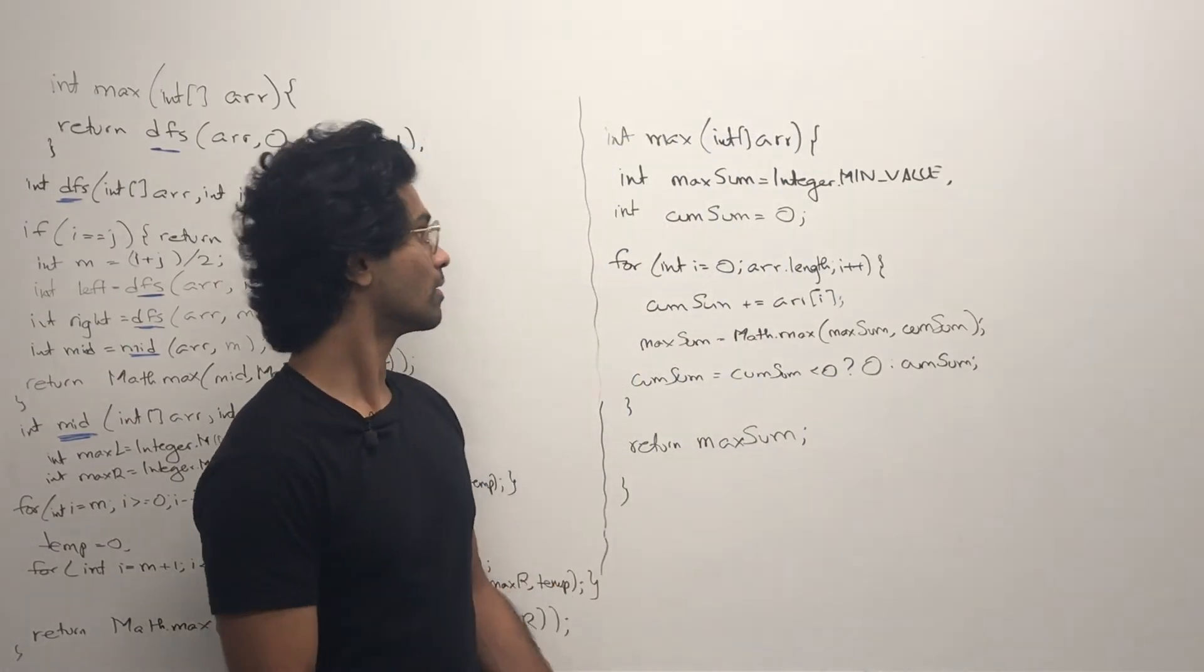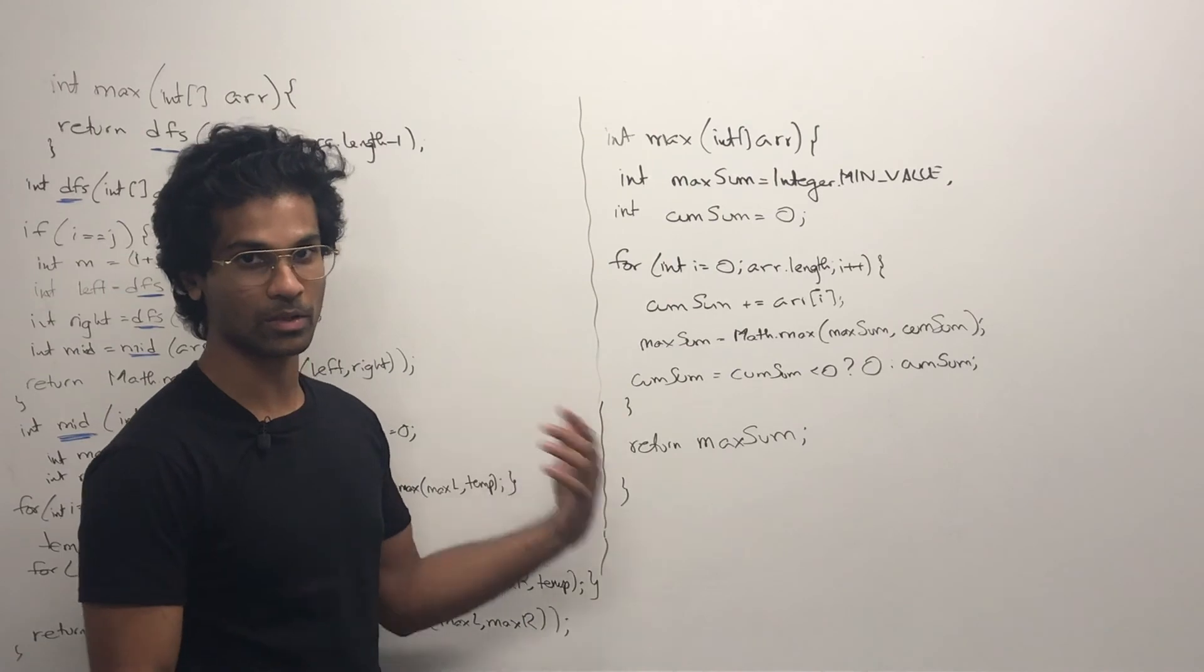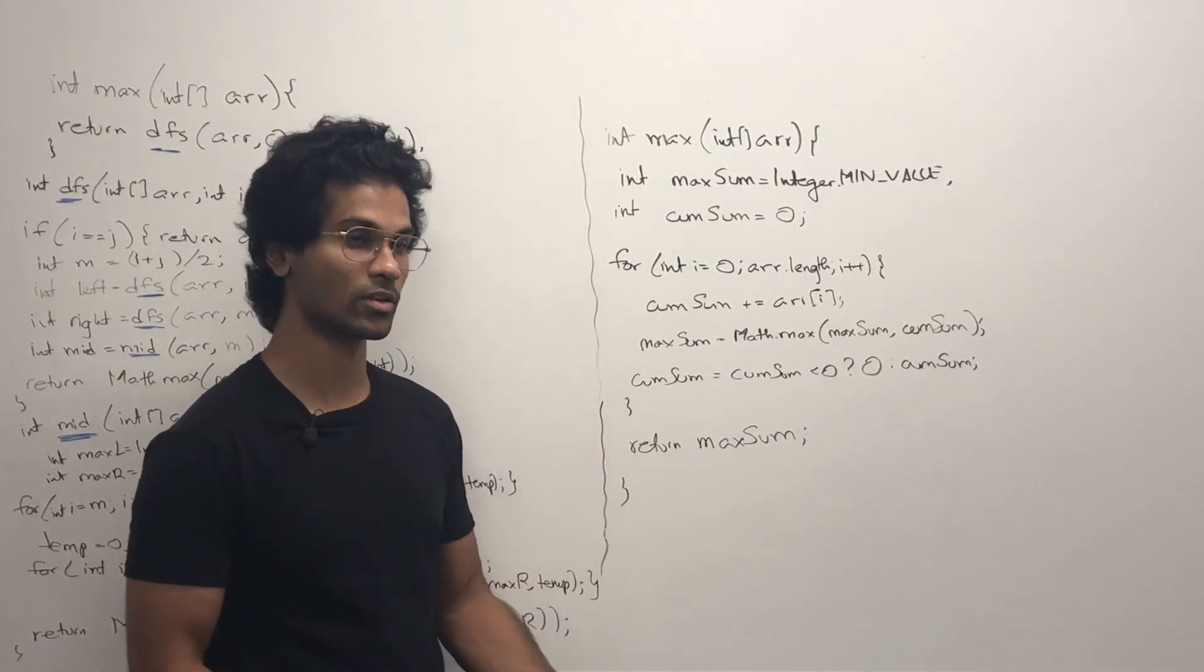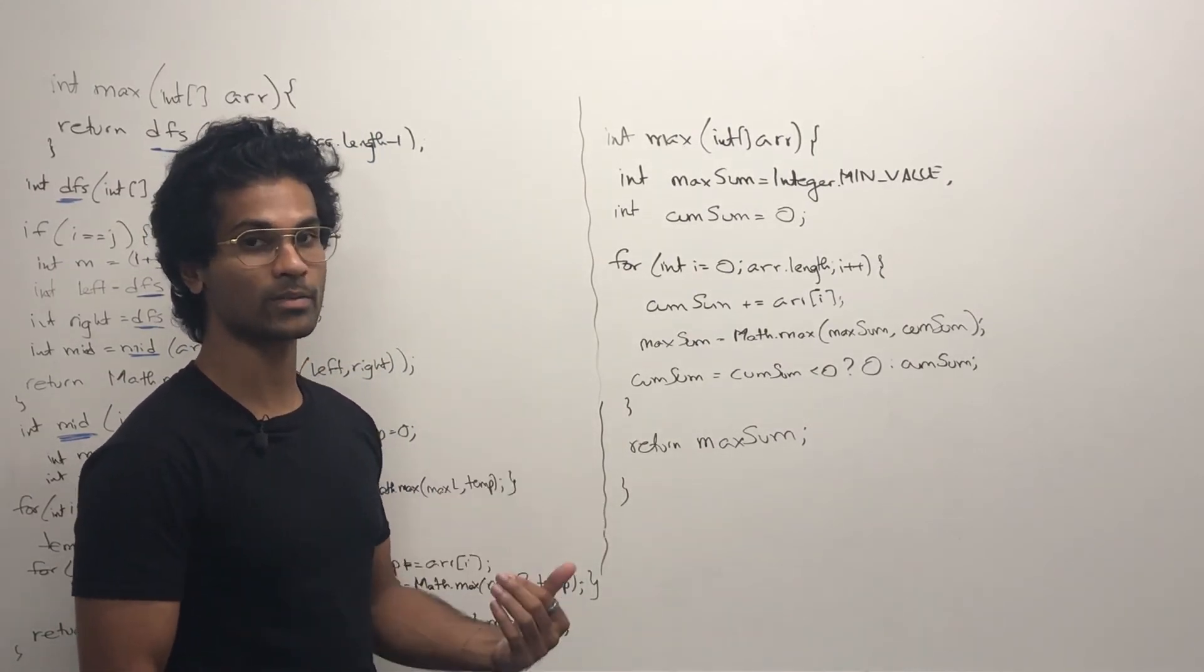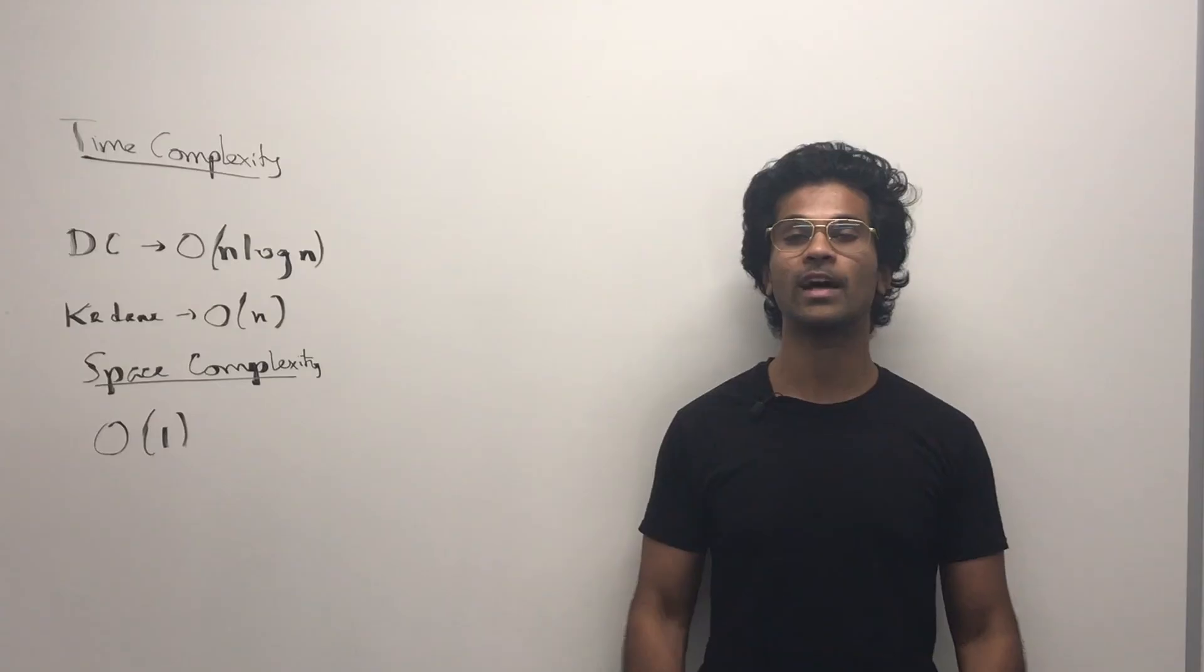Kadane's algorithm is a lot simpler. All we have is two integers, and we have a maxSum cumulative sum. The cumulative sum just gets added every time, and if it's ever negative, we reset it to zero. Otherwise, we keep track of the cumulative sum and maxSum and get the maximum each time, and ultimately return max time and space complexity.